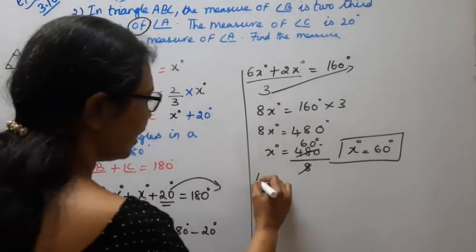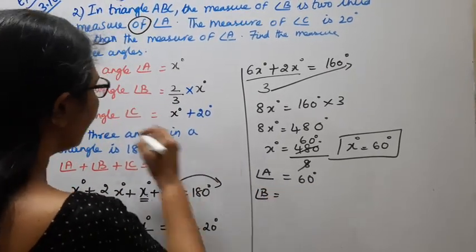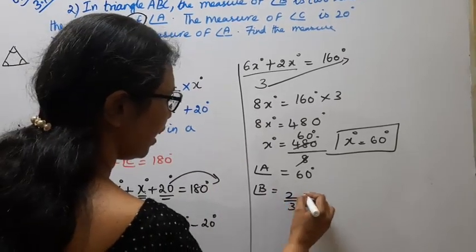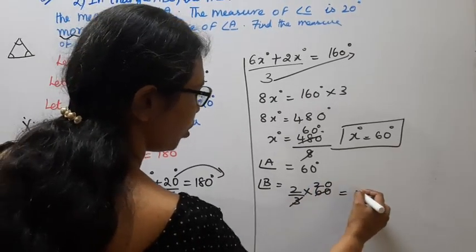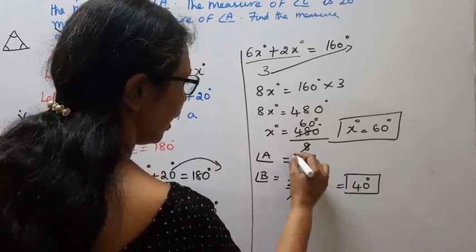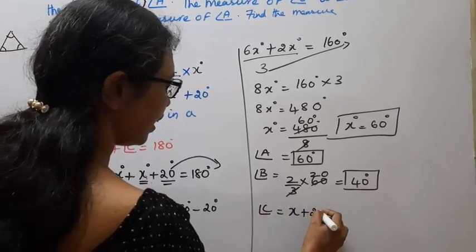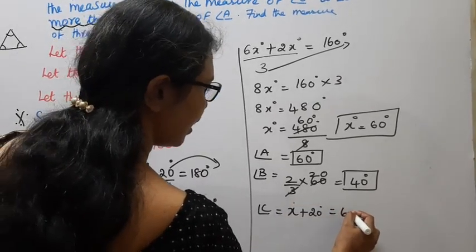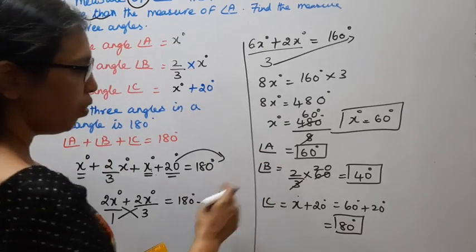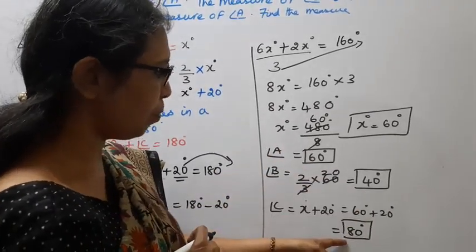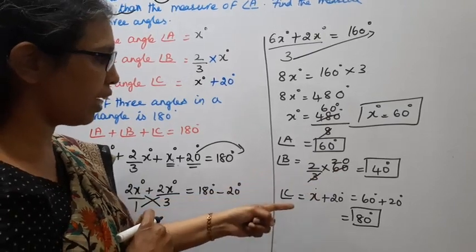The 3 angles: angle A equals 60 degrees. Angle B equals 2/3 into 60, which is 40 degrees. Angle C equals X plus 20 equals 60 plus 20 equals 80 degrees. Check: 60 plus 40 plus 80 equals 180 degrees. Correct!